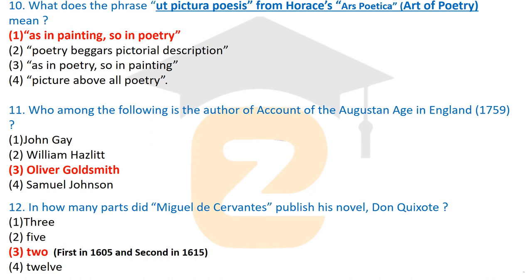Question ten: what does the phrase 'ut pictura poesis' from Horace's 'Ars Poetica' (Art of Poetry) mean? This phrase is from Horace's work 'Ars Poetica,' in which Horace advises poets on how to write — covering the art of writing poetry and drama.